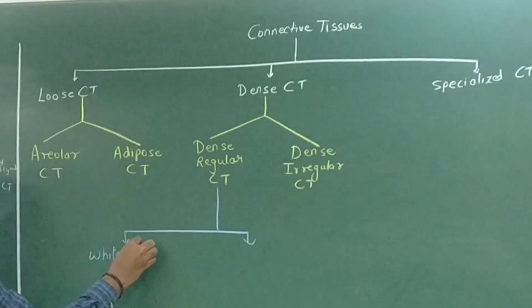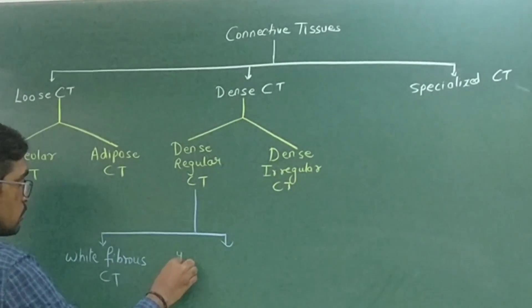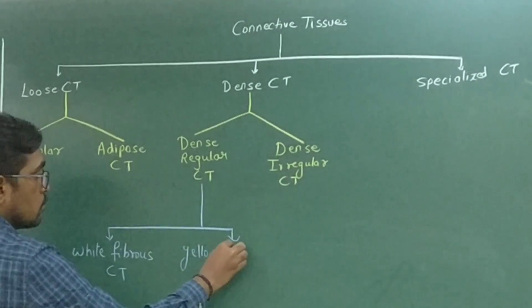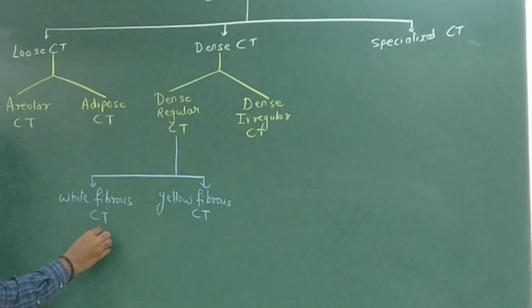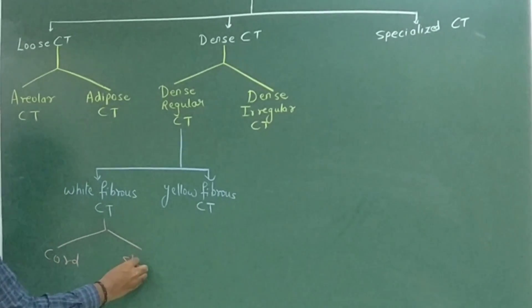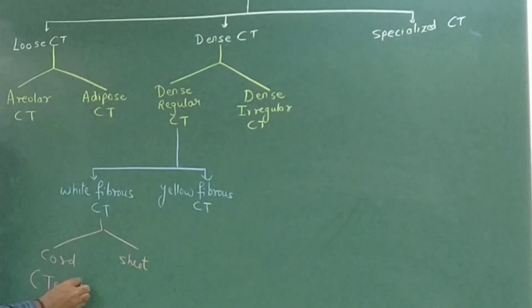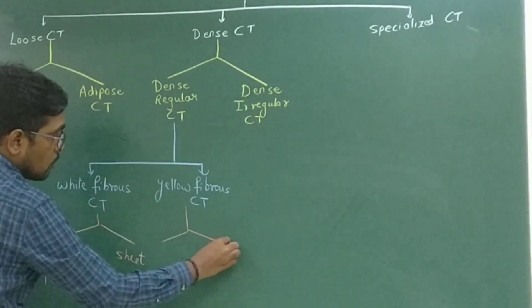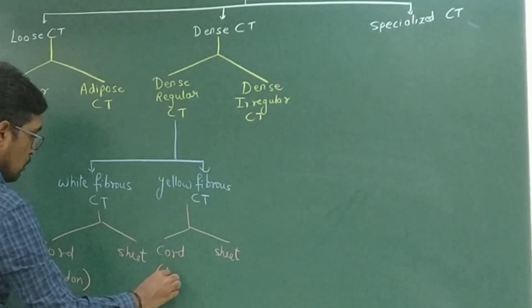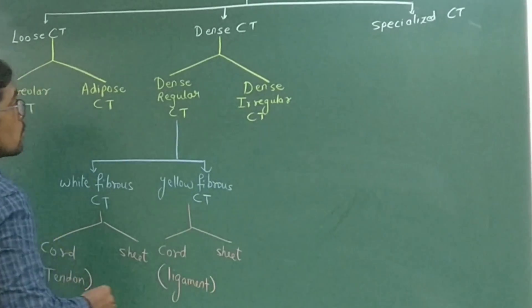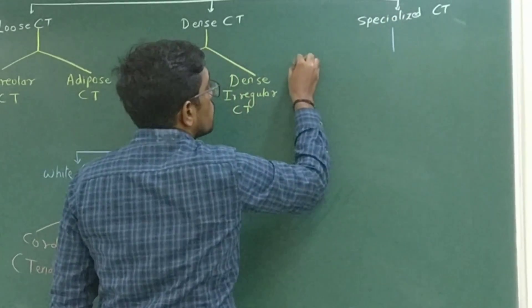Dense regular connective tissue consists of white fibrous connective tissue and yellow fibrous connective tissue. White fibrous connective tissue includes cords and sheets. In cords we have the tendon, and white fibers are also called collagen. Yellow fibrous connective tissue also consists of cord and sheet. In cord we have ligaments. Remember, yellow fibrous connective tissue is also known as elastin.